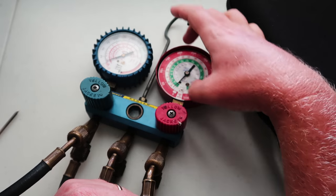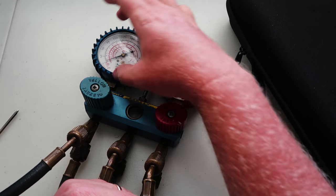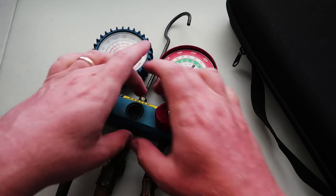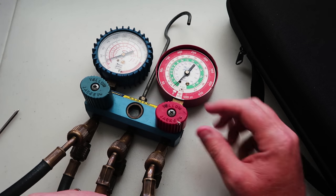The gauges are actually these two components here, these two parts, so we'll often call them gauges, but really we should call it a manifold. This part here is the manifold body, and these come in a lot of different types.